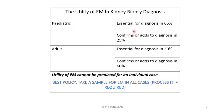In pediatric cases, EM is deemed essential for diagnosis in nearly two-thirds of cases, and it confirms or adds to the diagnosis in about a quarter of cases. In adult biopsies, the situation is more or less reversed — it is essential for diagnosis in about one-third of cases, and it confirms or adds to the diagnosis in about two-thirds of cases. Importantly, the utility of EM cannot be predicted for an individual case. The best policy therefore is for a nephrologist to take a sample for EM in all cases and reserve it, to be processed if required at a later date.